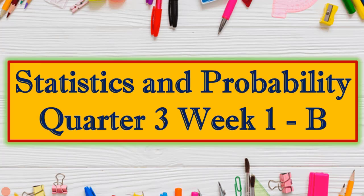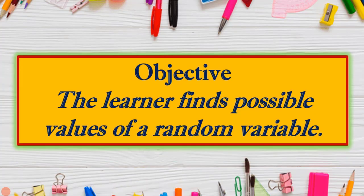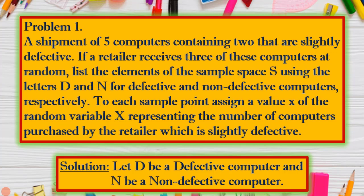Welcome to Statistics and Probability, Quarter 3, Week 1B. The objective is: the learner finds possible values of a random variable. Let's start with Problem 1. A shipment of five computers contains two that are slightly defective. A retailer receives three of these computers at random. List the elements of the sample space S using the letters D and N for defective and non-defective computers, and assign a value x of the random variable X representing the number of slightly defective computers purchased.